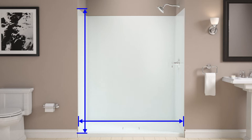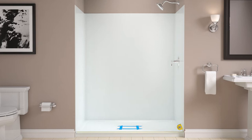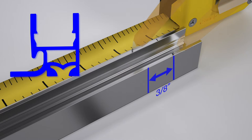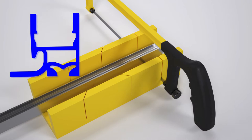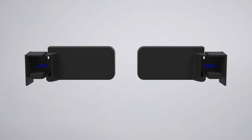Cover the drain with tape to avoid the loss of small parts. Measure the distance between the walls along the shower ledge and mark this distance on the threshold. Make a second mark 3⁄8 inch to the inside of the first mark. Cut the threshold at the second mark and file any rough edges. Note that there is a left and right bumper; press the bumpers onto the ends of the threshold.